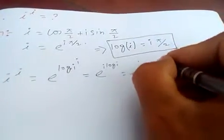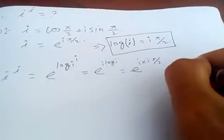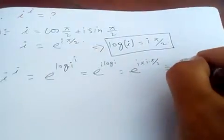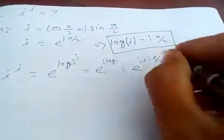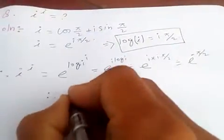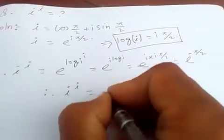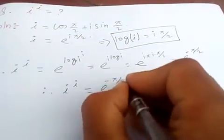Which is e to the i times, log i is i π over 2, so e to the i times i is i squared, which is minus 1, times π over 2. Therefore, i to the i is e to the minus π over 2.